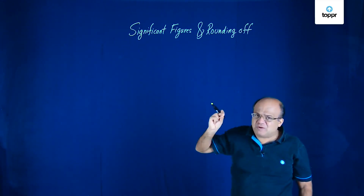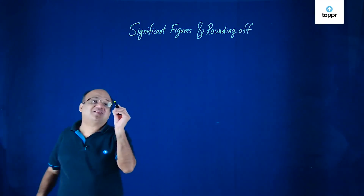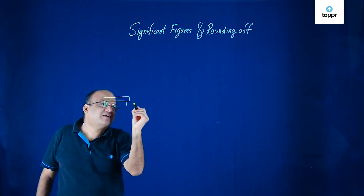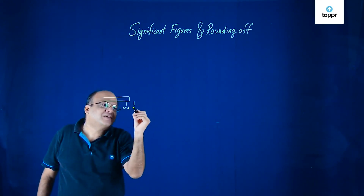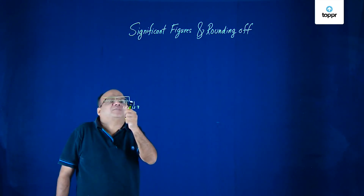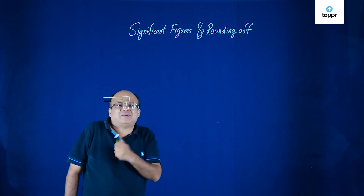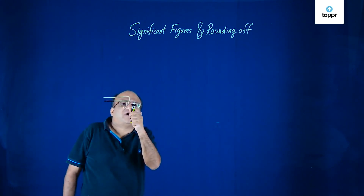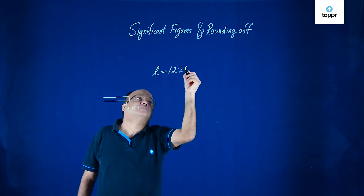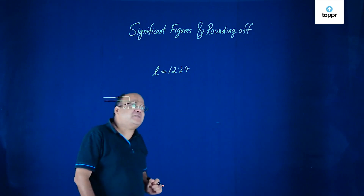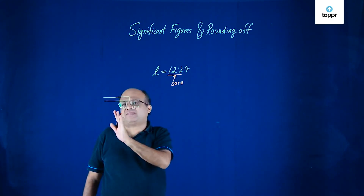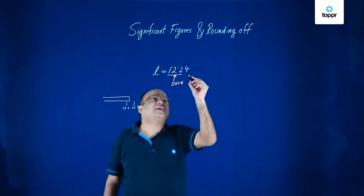No measurement will be exact. Suppose you measure the length of something using some scale and you find that it is lying between 12.2 cm and 12.3 cm. So definitely it is 12.2 something. That something we can estimate. Maybe it is closer to 2, far from 3, so I can take this as 4. So we will say the length is 12.24. Now in this measurement, 12.2 we are sure. Anybody measuring this will say it is 12.2. The next digit is doubtful.